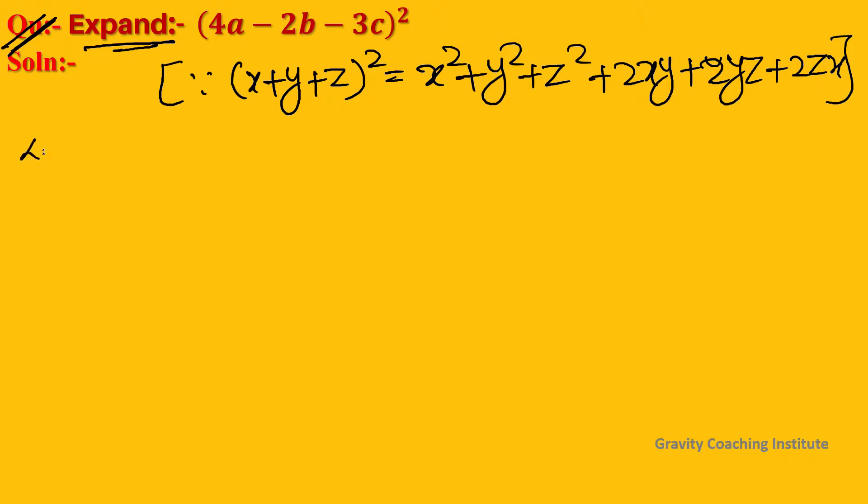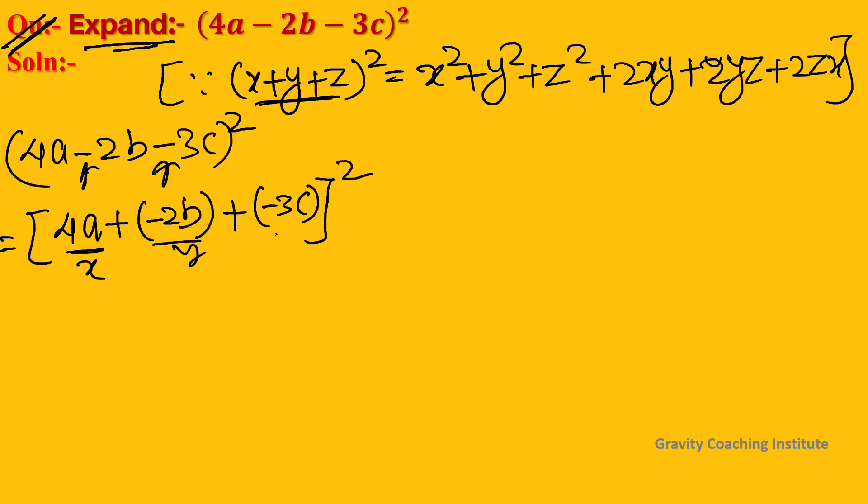We apply this identity to (4a - 2b - 3c)². First, we identify the values where x = 4a, y = -2b, and z = -3c, then we substitute these into the identity formula.